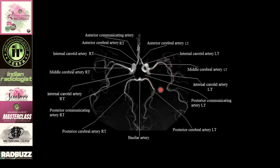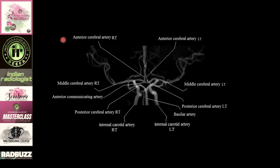There are various anatomic variations, like hypoplastic A1 segments of the anterior cerebral arteries. Whenever the posterior communicating artery has a diameter larger than the P1 segment of the posterior cerebral artery, it appears to continue with the rest of the PCA — we call this a fetal variant of the posterior cerebral artery.